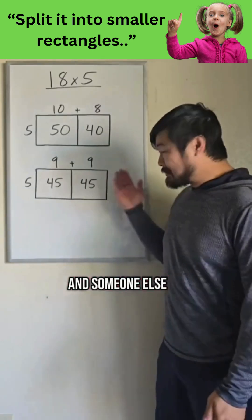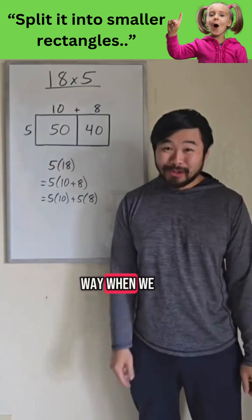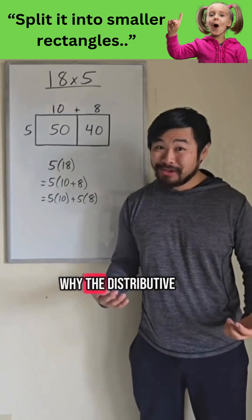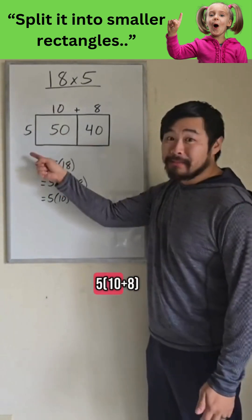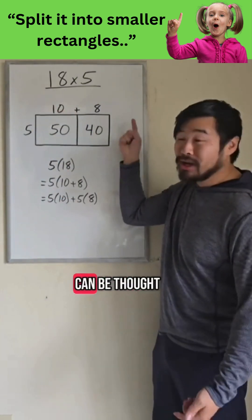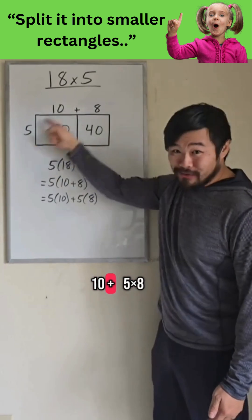And someone else could have done it like this. And by the way, when we draw a rectangle, we can see why the distributive property works. 5 times the quantity 10 plus 8 can be thought of as 5 times 10 plus 5 times 8.